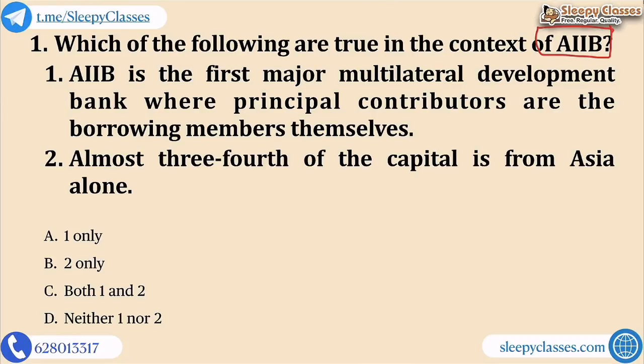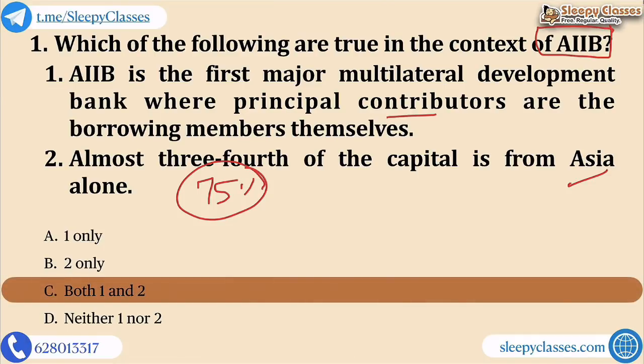The first statement says that in AIIB, the principal contributors are also the borrowing members, and this is the first multilateral development bank where this condition applies. The second statement says that 75% of the capital is only from Asia. The correct answer is C — both statements 1 and 2 are correct.